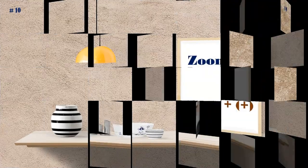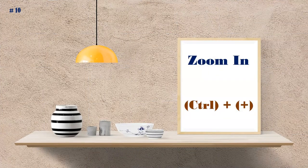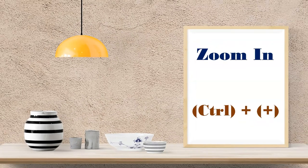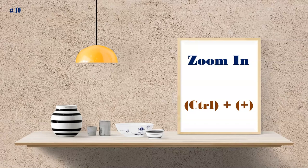The last shortcut is zoom in and zoom out. While presenting, if some font is very small or you want to zoom in on an important image, instead of going to the help menu, use Ctrl and the plus symbol to zoom in. To zoom out, use Ctrl and the minus symbol. So Ctrl+Plus for zoom in and Ctrl+Minus for zoom out.